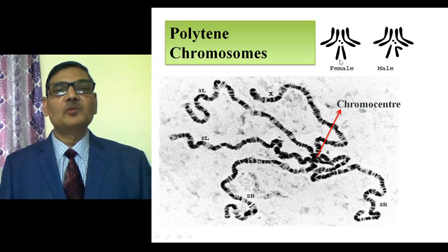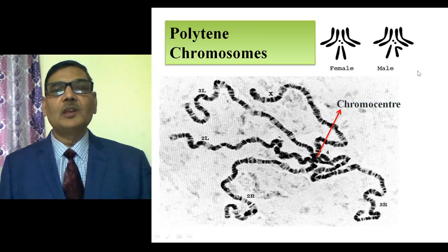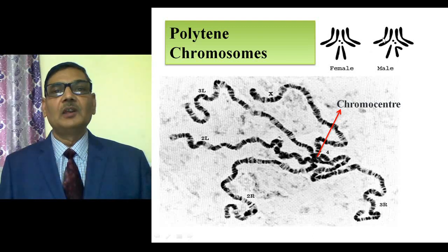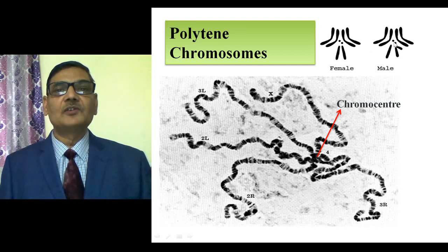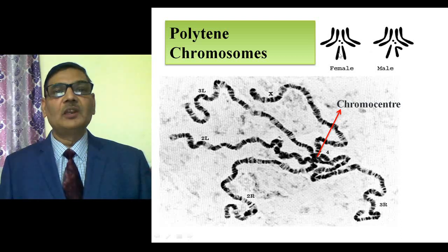You can also prepare metaphase chromosomes from the brain of a female or male individual. In the male, the first chromosome pair consists of X and Y chromosomes, followed by the second and third autosome pairs, and a pair of very small, dart-shaped fourth chromosomes. In the female, you can see two X chromosomes, then the second, third, and tiny fourth chromosomes. Counting all chromosomes: 1, 2, 3, 4, 5, 6, 7, 8 — so 2N equals 8.